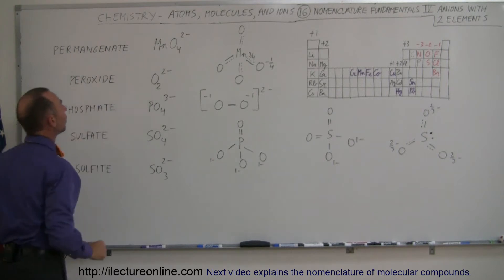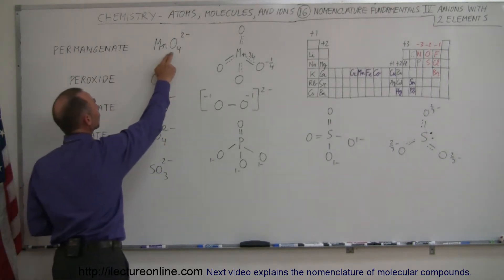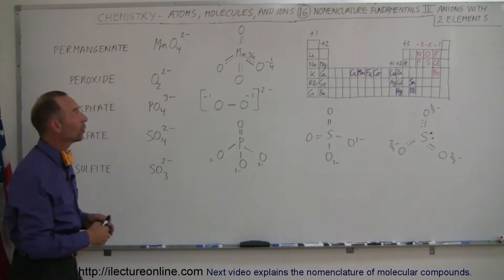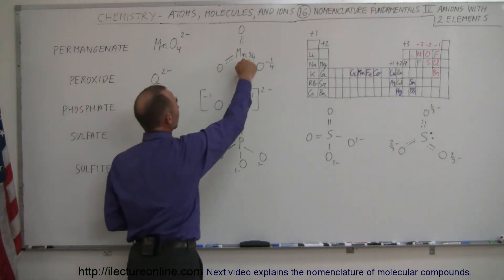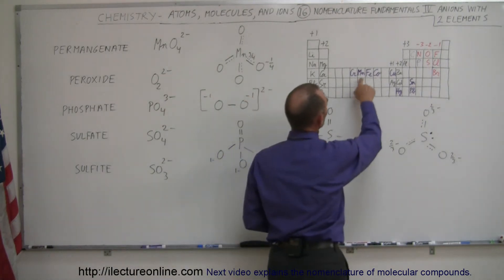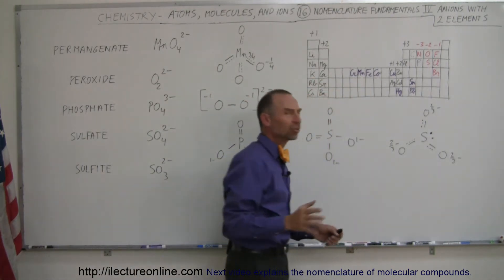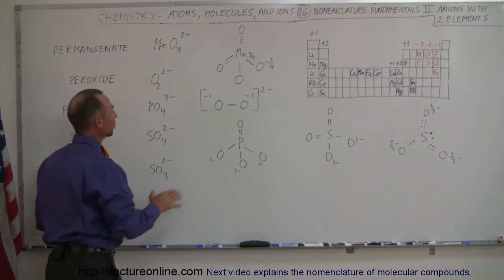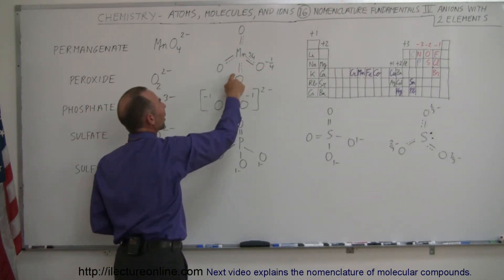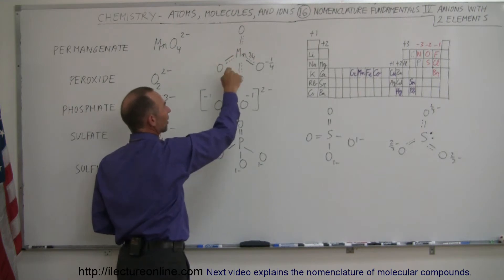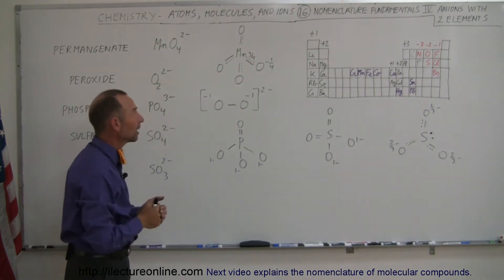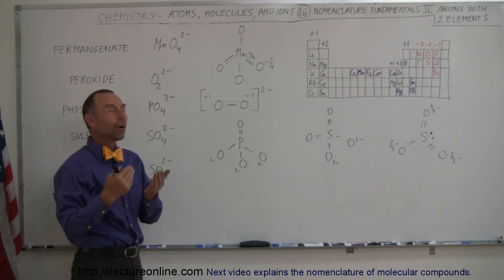We have what we call permanganate, which includes manganese and oxygen — one manganese atom, four oxygen atoms — and so we have a bonding structure like this. Notice that manganese is over here, which means that it has seven valence electrons, but it's trying to bond with eight oxygens, so we have four permanent bonds and then three electrons left to make four additional bonds.